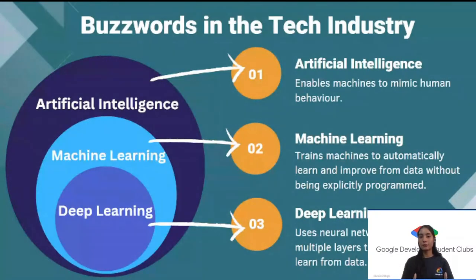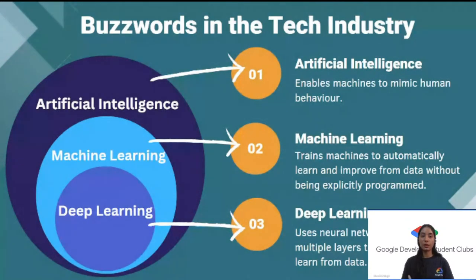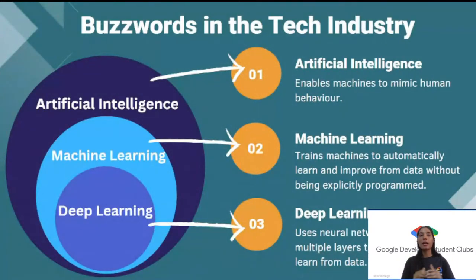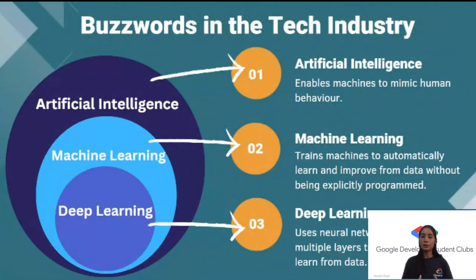Let's talk about the buzzwords in the tech industry: artificial intelligence, machine learning, and deep learning. Artificial intelligence enables machines to mimic human behavior — Sophia is an example. AI is a superset containing machine learning and deep learning. Machine learning is a subset of AI that uses statistical and mathematical tools to build models that learn from experience. Deep learning is a subset of machine learning that uses artificial neural networks.